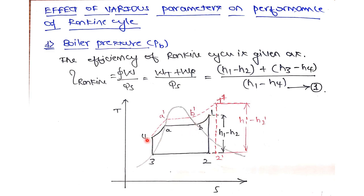Heat is added in three stages in the Rankine cycle: from 4 to A is the economizer, where sub-cooled liquid is heated to saturated liquid state with no phase change. From A to B occurs in the boiler — a constant pressure, constant temperature phase change process where saturated liquid is entirely converted to saturated vapor. From B to state 1, superheating raises the temperature without phase change.